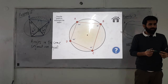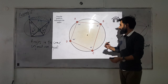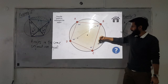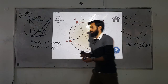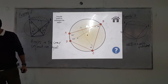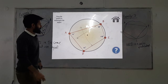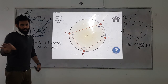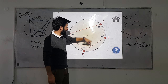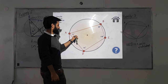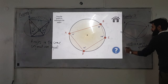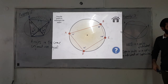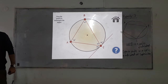So what happens when you have a cyclic quadrilateral? The opposite angles are supplementary, meaning they sum to 180 degrees. We can see that 99 plus 81 gives 180, and 101 plus 79 gives 180. No matter how I drag these points around, opposite angles will always be supplementary — this property only applies to a cyclic quadrilateral, not any quadrilateral.